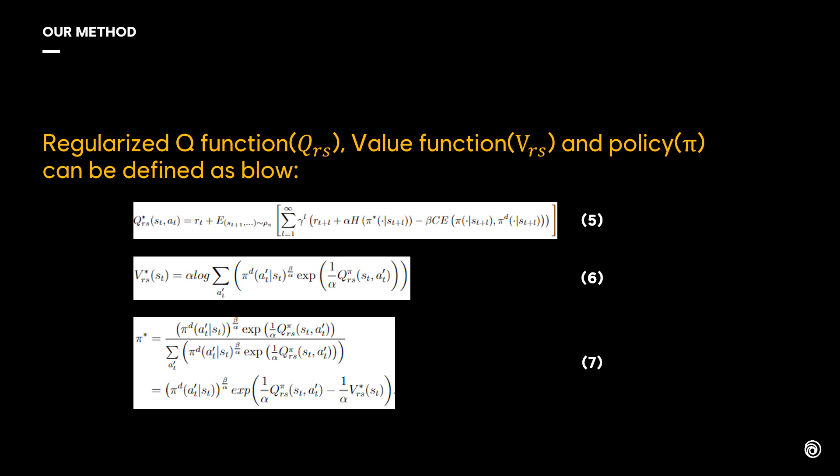Compared to original equations of Soft Actor Critic, the new Q function has an additional cross entropy term, and both the new value function and the policy have an additional policy of demonstrated behavior.